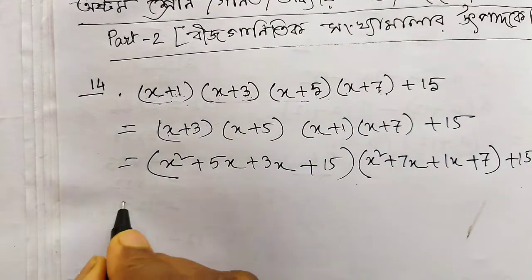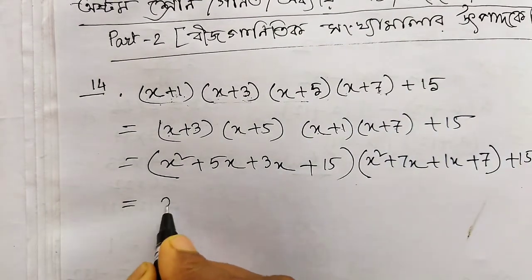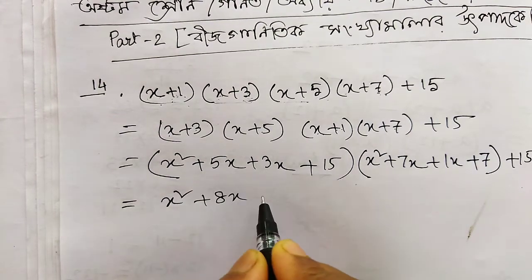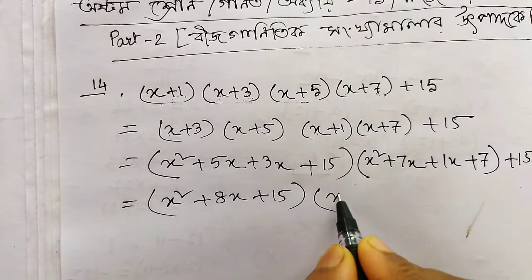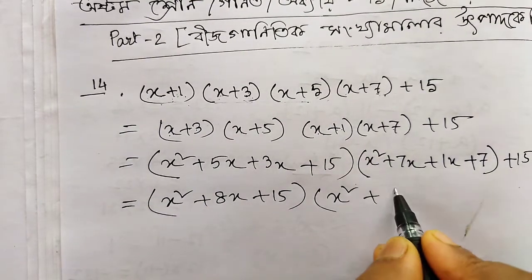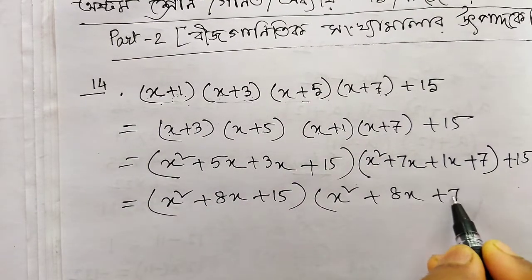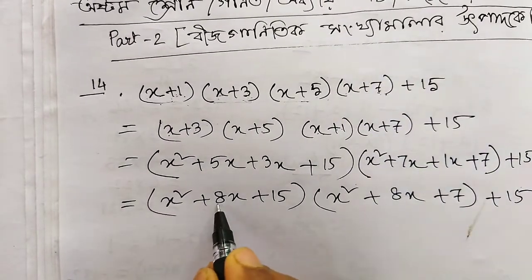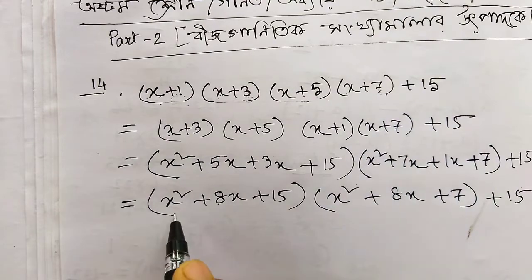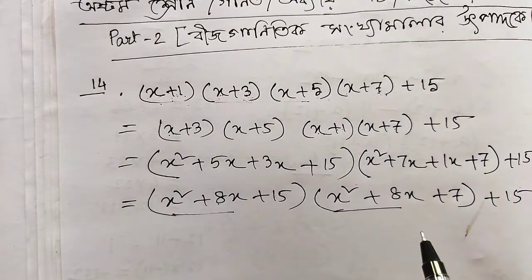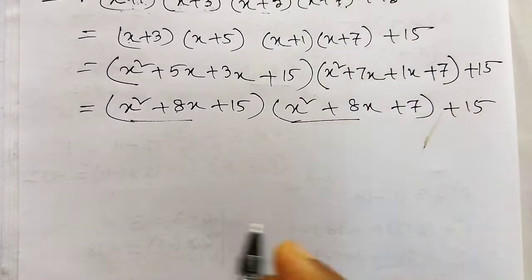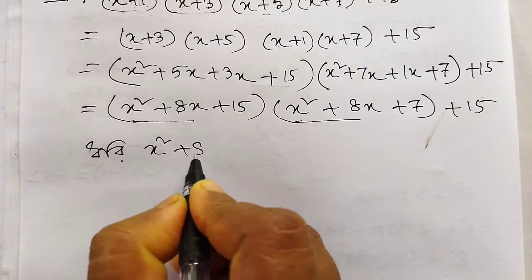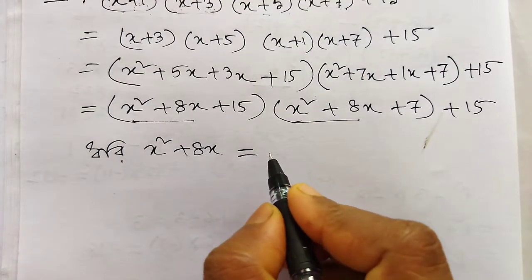15 - Here we see x squared plus 5 into 3 is 8, 8x plus 15. x squared plus 7 plus 8 equals 15. The product of the two factors equals 8. That means these two parts, the product of the two, are equal. So here we assume x squared plus 8x equals some unknown variable.